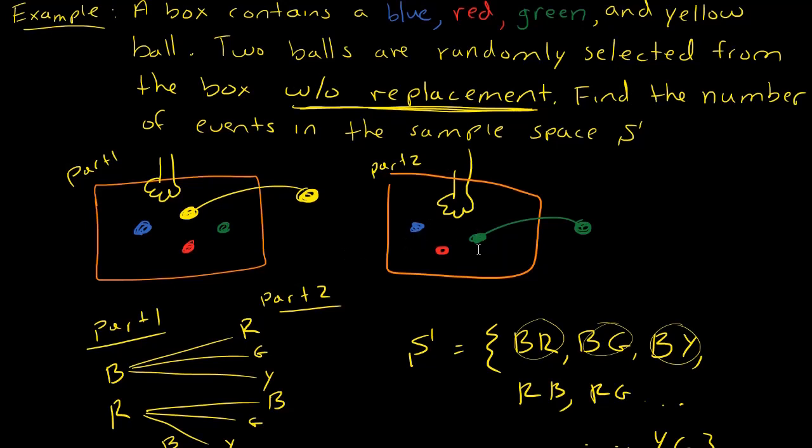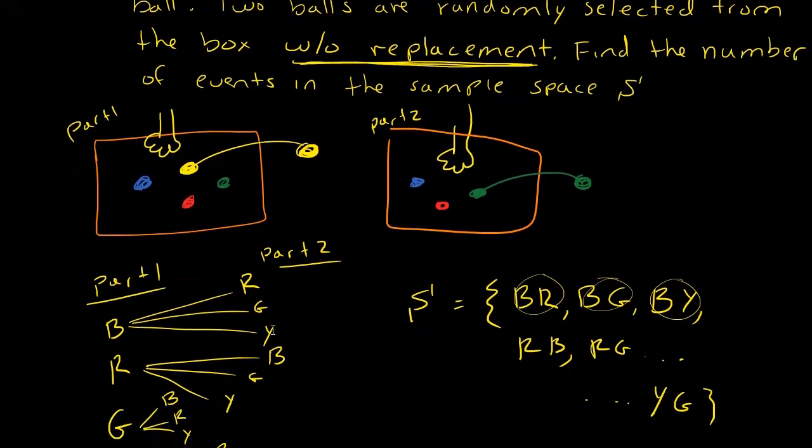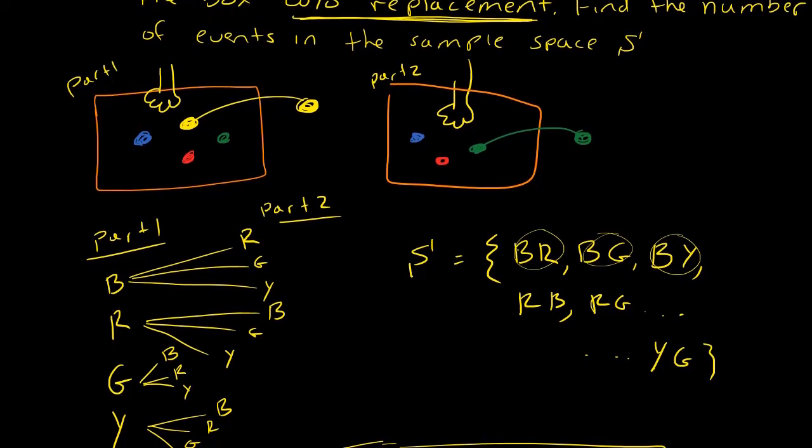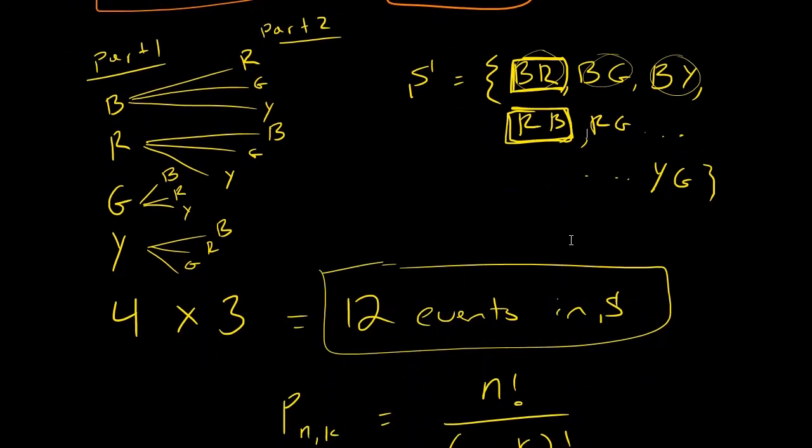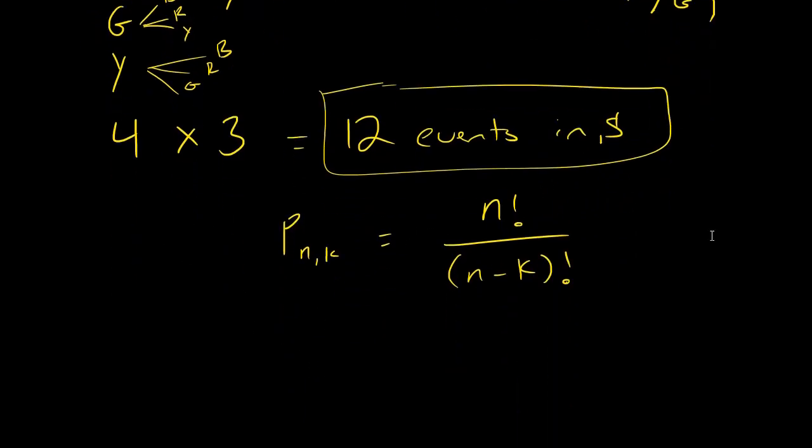You could think of this problem, you could either count this to be the same event as this, or you could count them to be two different events. And for this scenario, I'm counting them to be two different events. So if you recognize that you're doing that, and you have sampling without replacement, then you are good to go using this formula.